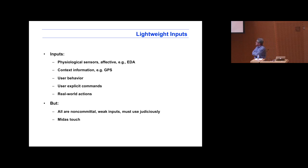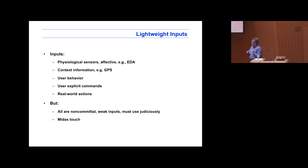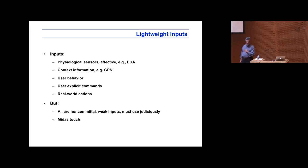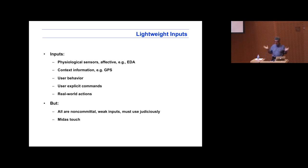So inputs might be sensors. In our case we're using brain sensors, but there might be other kinds — skin resistance across your skin is a common one. They might infer things from your behavior, like how fast you're typing, or find out things from your context. All of these are not intentional inputs, so we have to be very careful. When your skin resistance changes, you didn't decide to make it go up — you're just not thinking about it. It just happens. So we have to be very careful when using these very weak inputs.